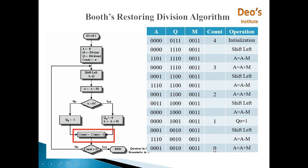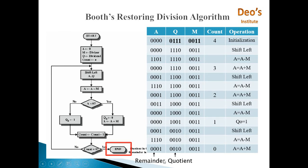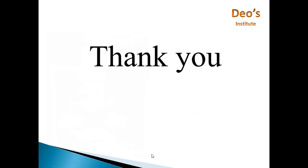Count will be decremented by 1 — count will become 0. Now count is 0, so end. End means the quotient is in Q and the remainder is in A. This is remainder A and quotient Q. We started with Q equal to 7 and M equal to 3. So 7 divided by 3 gives quotient 2 and remainder 1. Quotient is in Q and remainder is in A. This is how Booth's restoring division algorithm works. In my next video, we will see Booth's non-restoring division algorithm.